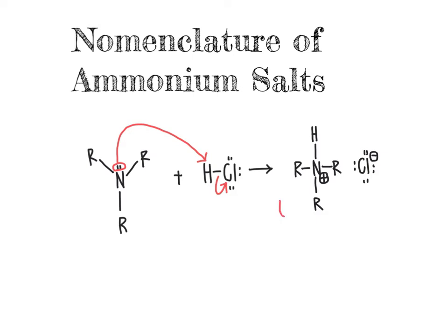We refer to them as ammonium salts because the term ammonium refers to a positively charged nitrogen atom. In other words, a nitrogen that has four covalent bonds will be referred to as an ammonium ion because it will have that positive formal charge on it. This is an example of an ammonium salt group.